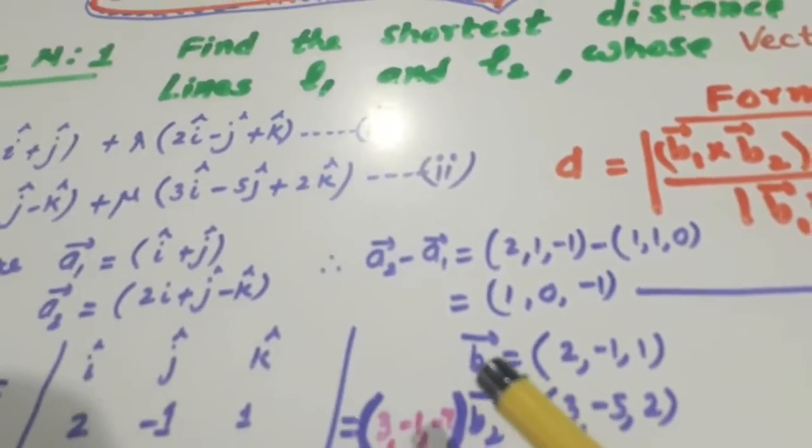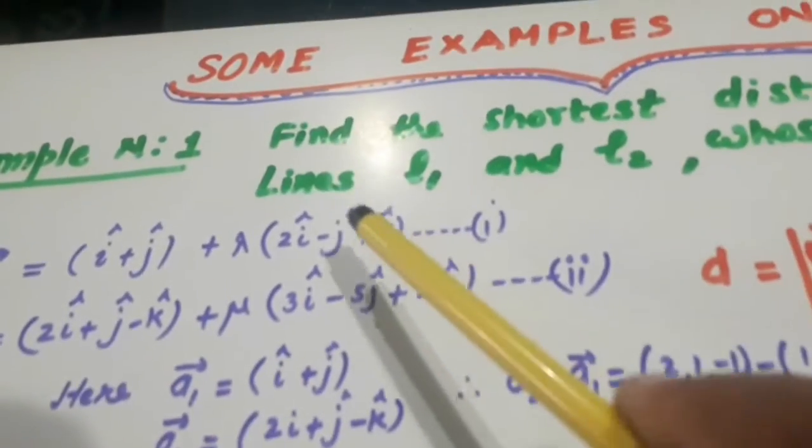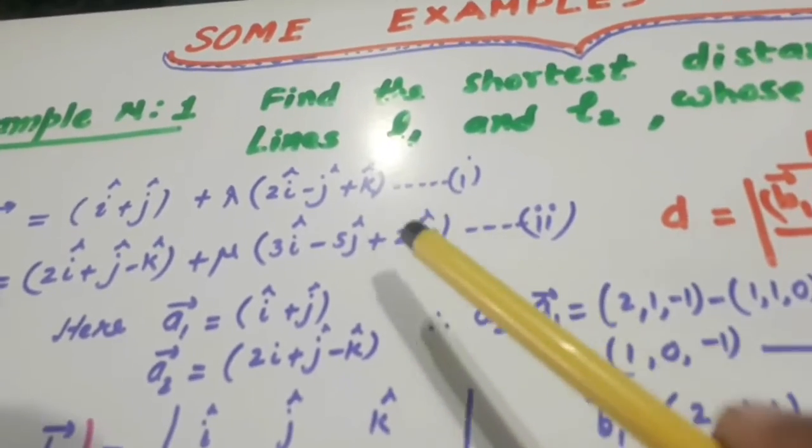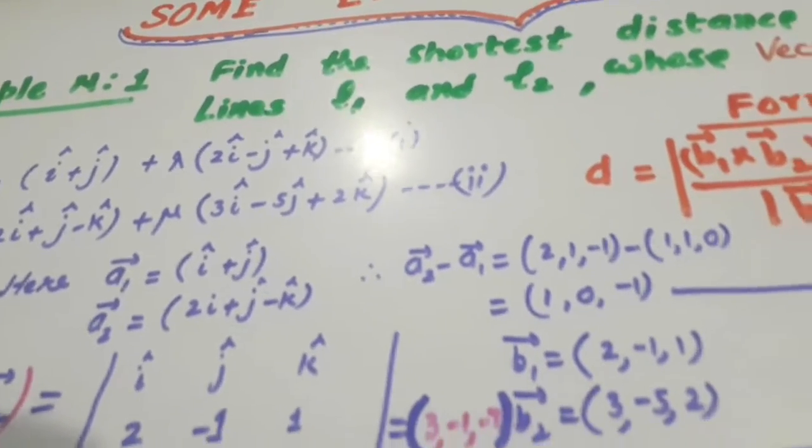Similarly, this is B1, this is B2. Let us find their cross product. Cross product means determinant. Here it comes.